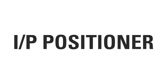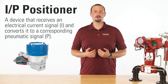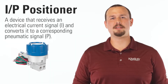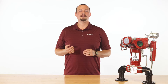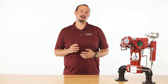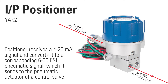The third term we'd like to go over is I2P positioner. An I2P positioner is a device that receives an electrical current signal, abbreviated I, and converts it to a corresponding pneumatic signal, abbreviated P. To do this, it also has a supply gas input that provides pneumatic pressure. For instance, our YAK2 receives a 4 to 20 milliamp signal and converts it to a corresponding 6 to 30 psi pneumatic signal, which it sends to the pneumatic actuator of a control valve.